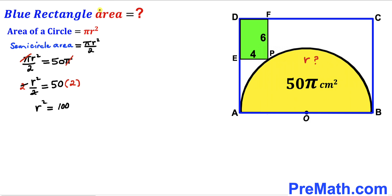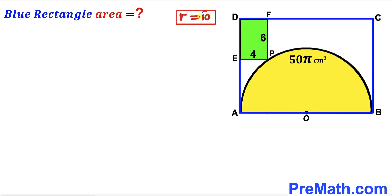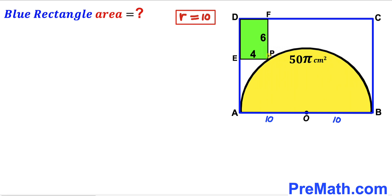Taking the square root of both sides to undo the square, our radius r turns out to be 10 cm. So AO is the radius 10 cm and likewise OB is 10 cm as well. In the next step we connect point P with points A and B.